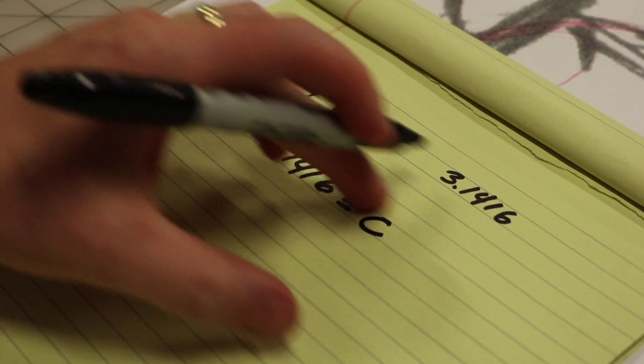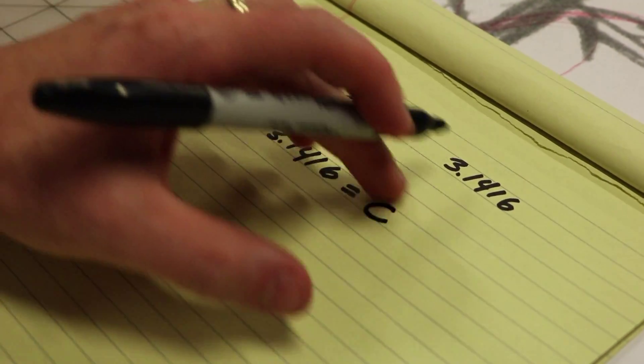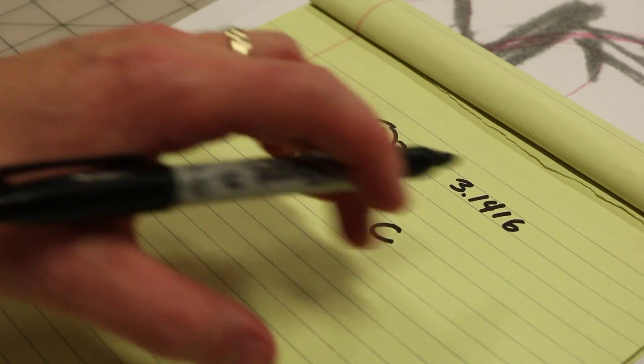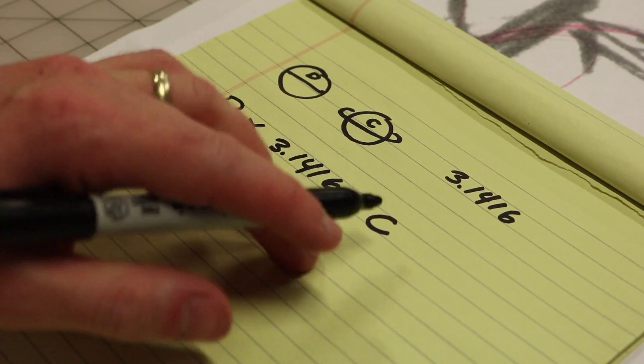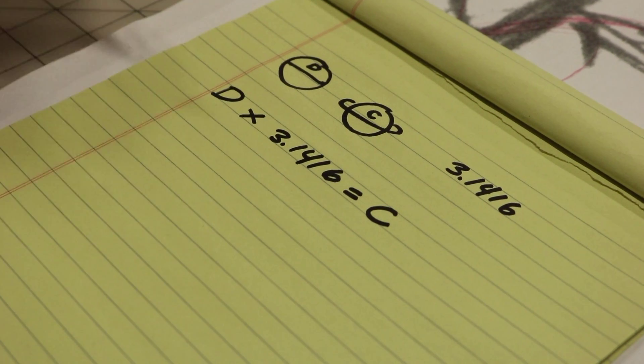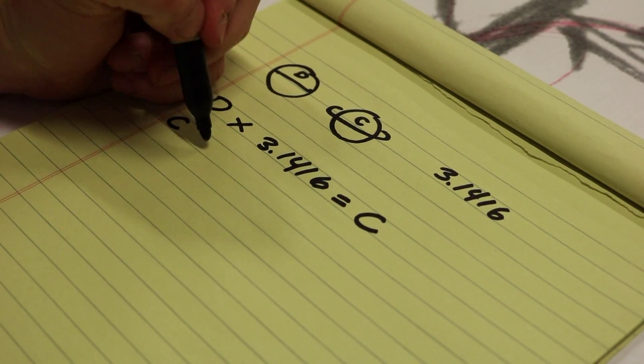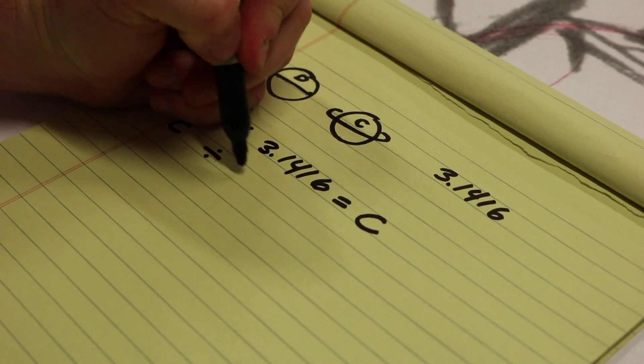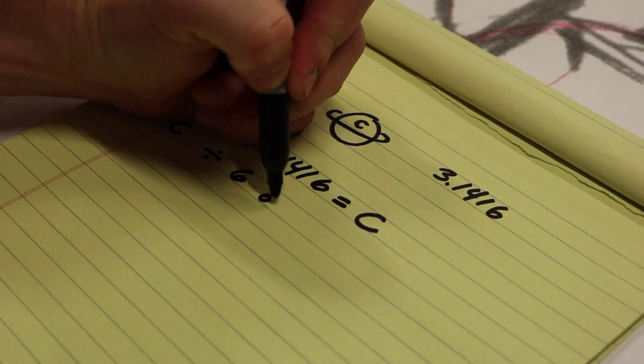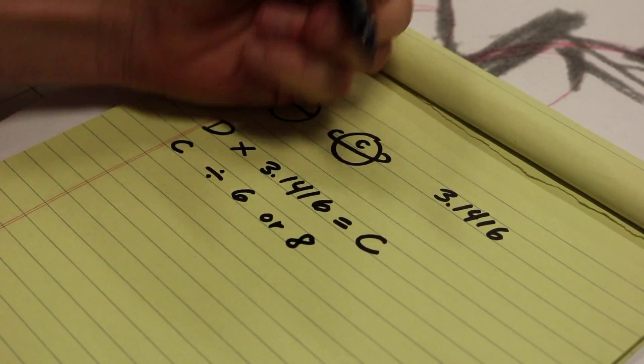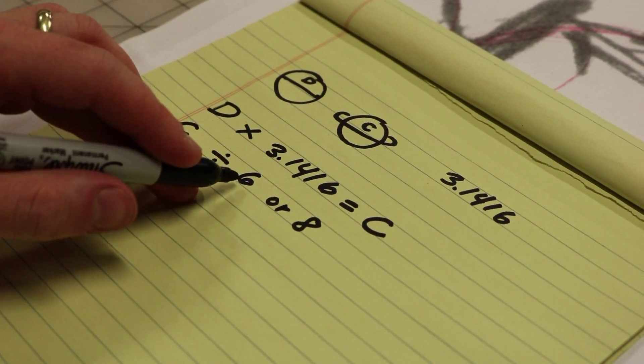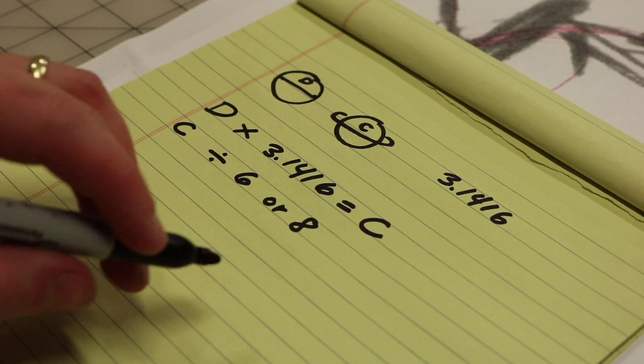And that's going to equal our circumference. Now we know how big around our puppet sphere is going to be. Now once we have that circumference number, we take the circumference and we divide it by either 6 or 8, because our sphere is going to be made up of either 6 or 8 petals.